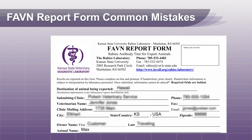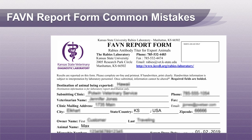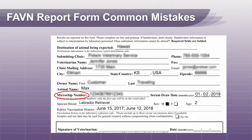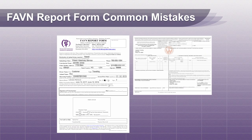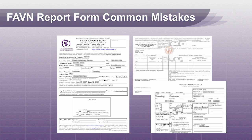The FAVN report form is an export document, therefore it is imperative that it be completed accurately. Many tests are delayed or rejected because microchip numbers or serum draw dates are recorded incorrectly. Import authorities are now comparing the FAVN form to all other documents, so please make sure the breed, sex, age, and rabies vaccination history agree on all these forms.